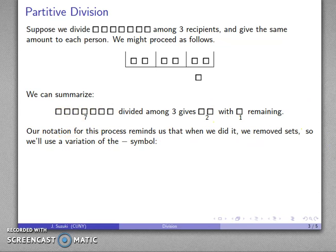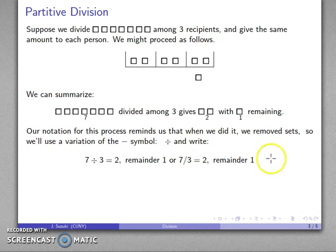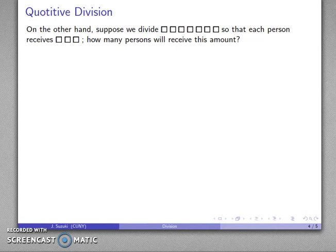The notation I'm going to use is going to be a variation of my subtraction symbol. I'll either write it as 'seven divided by three is two with a remainder of one,' or use something that looks like the subtraction symbol but is a slash: seven divided by three is two with a remainder of one.